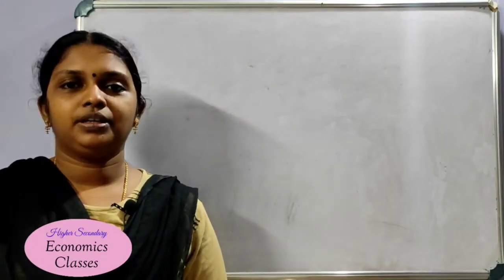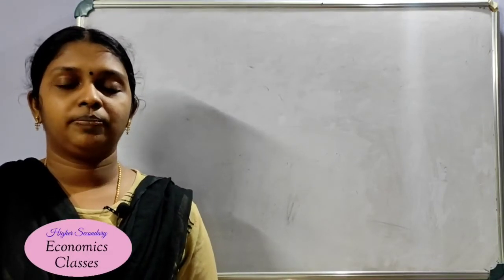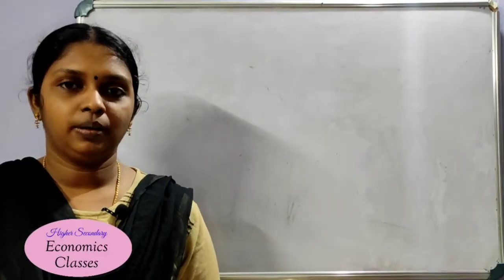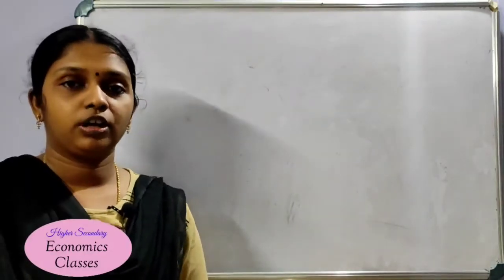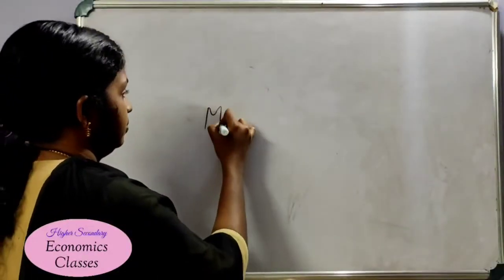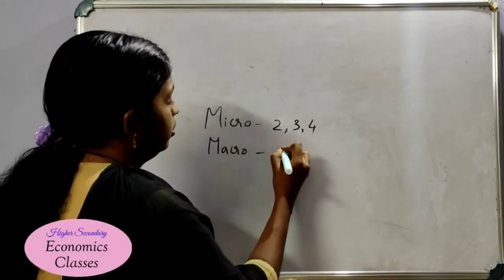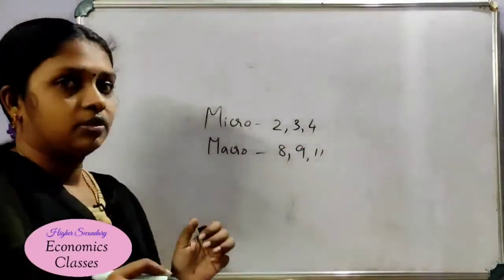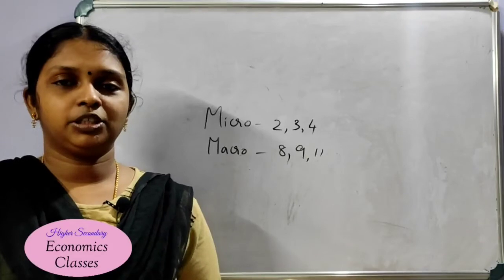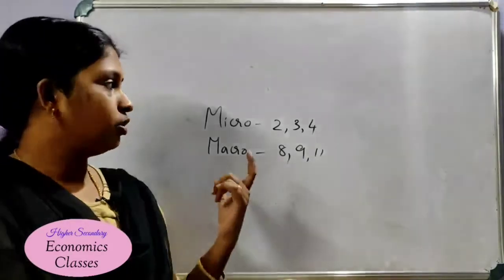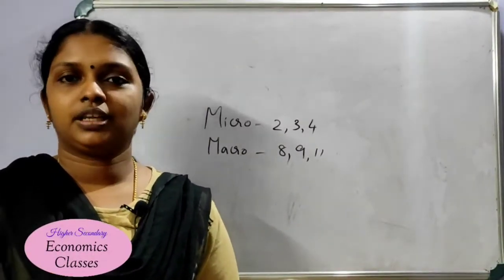The third chapter of microeconomics covers chapters 2, 3, and 4, and chapters 8, 9, 10, and 11. These chapters are fully covered. We will watch these chapters and expect a few of them. This is the overview of the course.